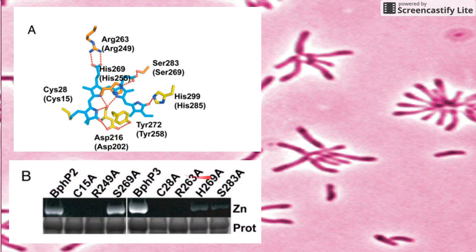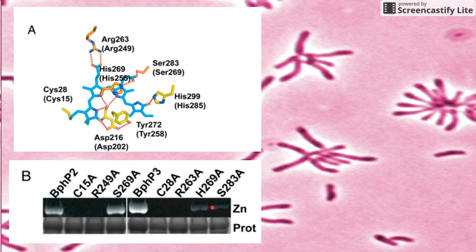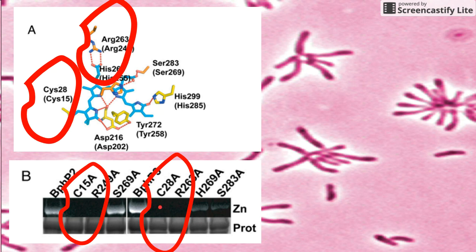With this assay here, they use zinc to induce fluorescence and basically test if biliverdin is attached to phytochrome. You can see that it's these residues that do the trick — whether it's cysteine-28 or arginine-263. If you mutate any one of those into alanine, you don't get any fluorescence, which means you don't have phytochrome and biliverdin bound together.